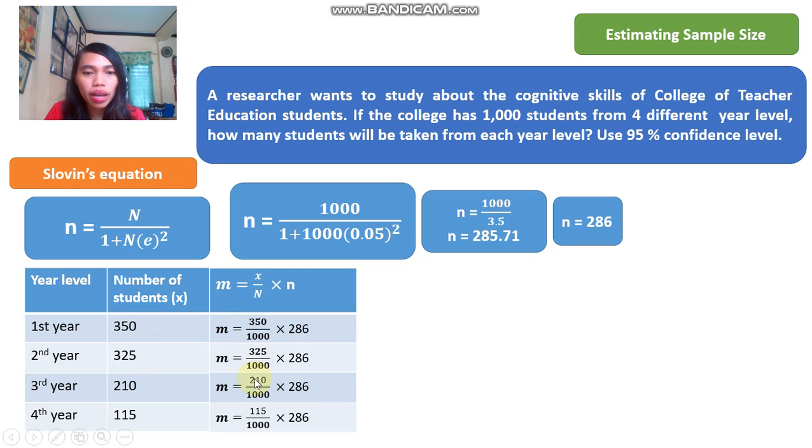So 325 over 1,000, 210 over 1,000, 115 over 1,000 times 286. So you will have this answer.